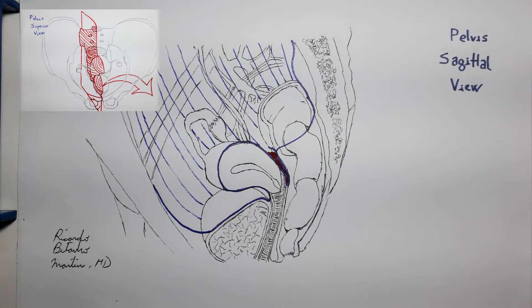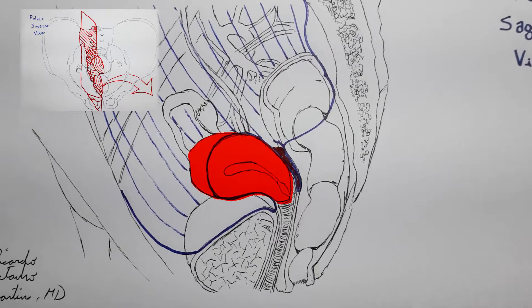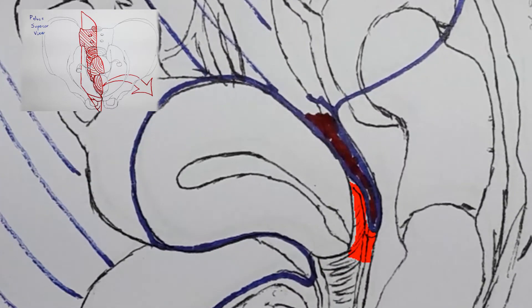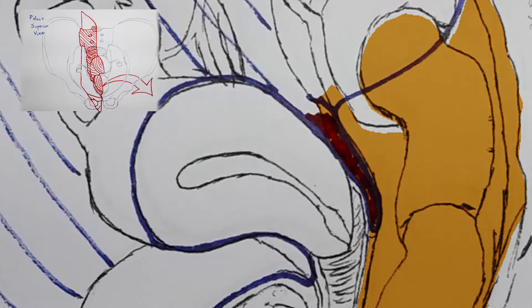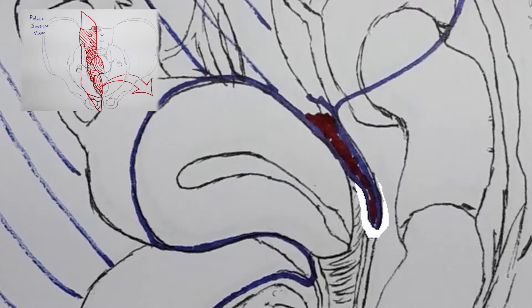This makes this small cavity, limited anteriorly by the uterus and the posterior fornix of the vagina, posteriorly by the rectum, and inferiorly by the peritoneal recto-vaginal fold,